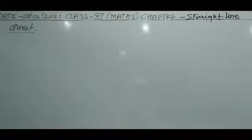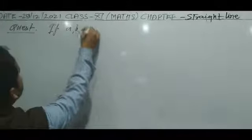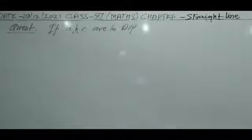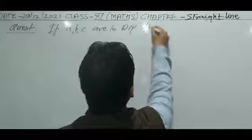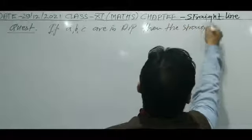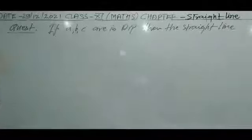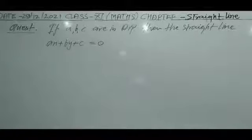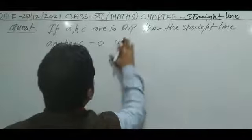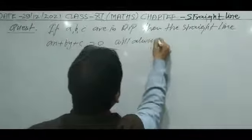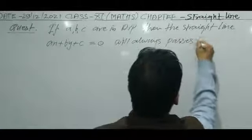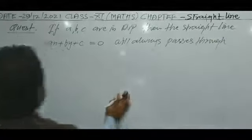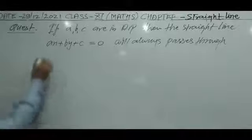If small a, small b, small c are in AP (arithmetic progression), then the straight line ax plus by plus c equal to 0 will always pass through — this blank is what we have to find.